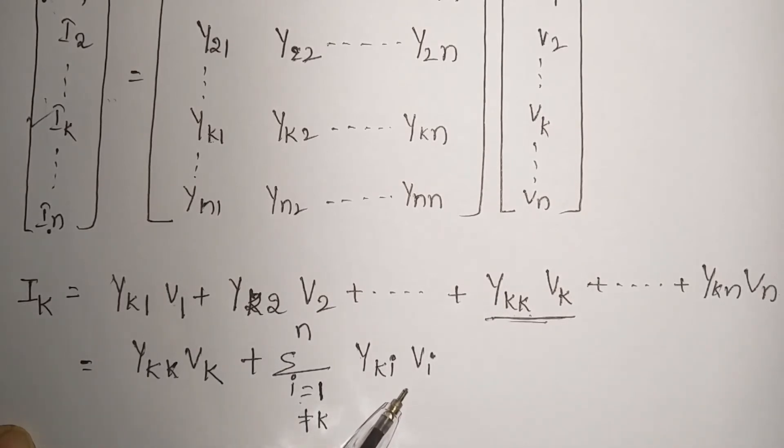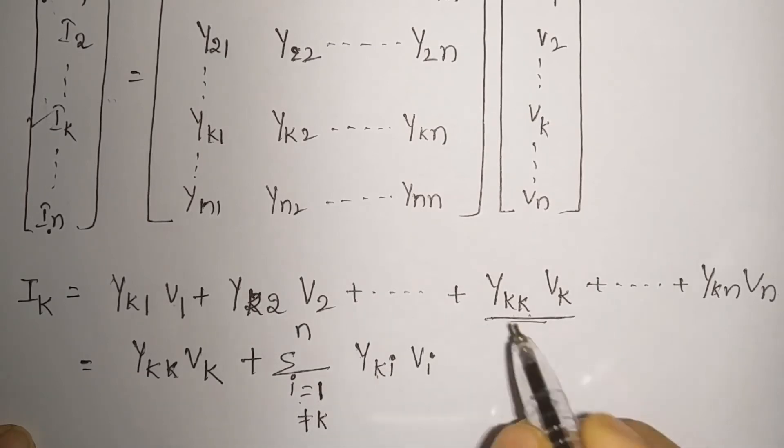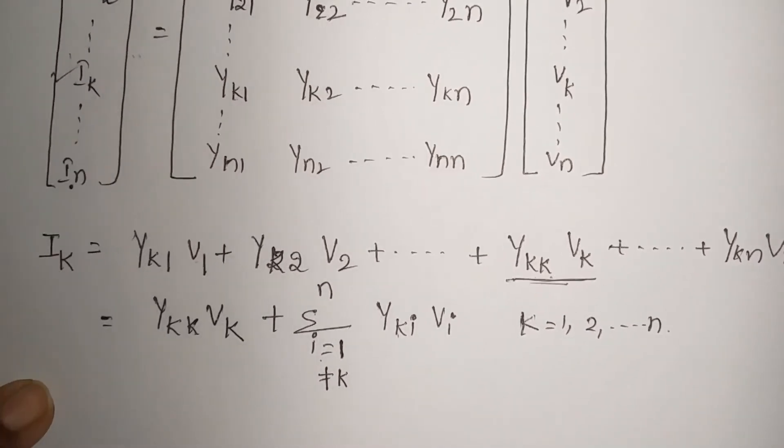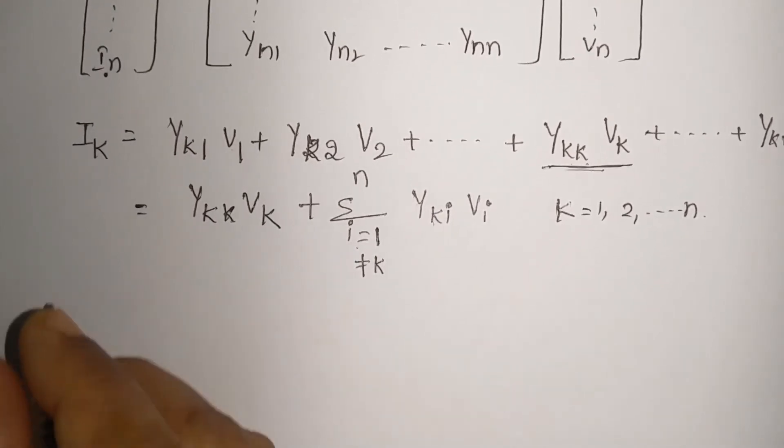Now i can be any number that is not equal to k. But what is k? K can be 1 to n, any number. So here k is any number 1, 2, and so on n.